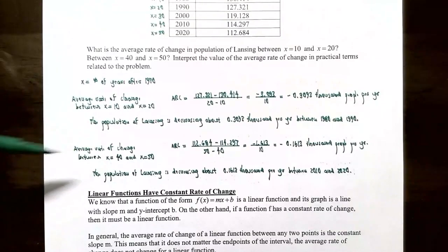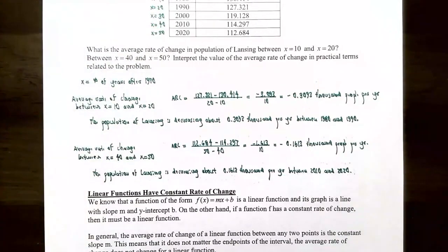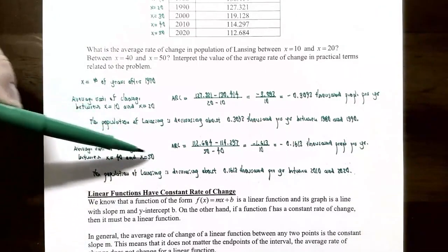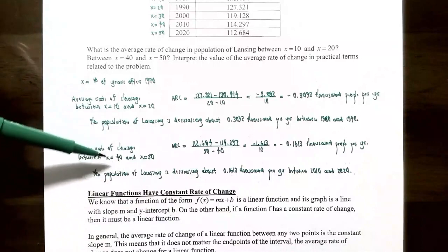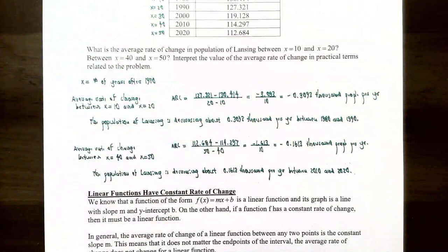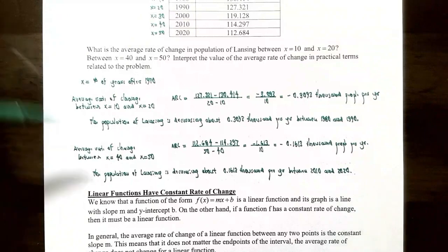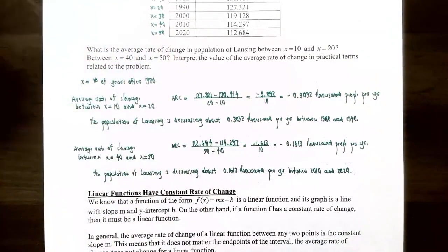For x equals 40 to x equals 50, the average rate of change is 112.684 minus 114.297 divided by 50 minus 40, giving negative 1.613 over 10, or negative 0.1613 thousand people per year. The population is still decreasing, but not as fast — the rate of decrease is smaller in magnitude than the negative 0.3093 thousand per year seen between 1980 and 1990.